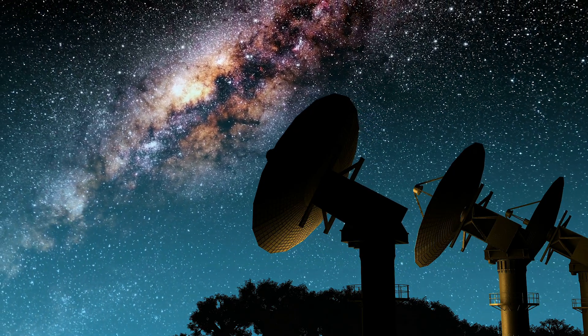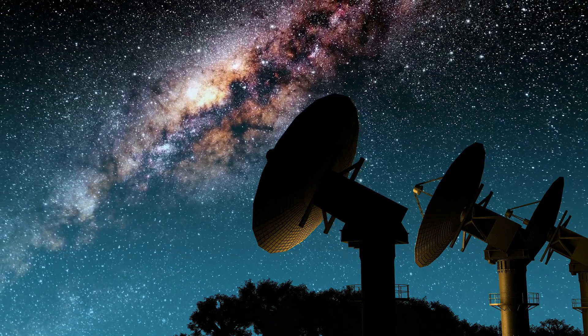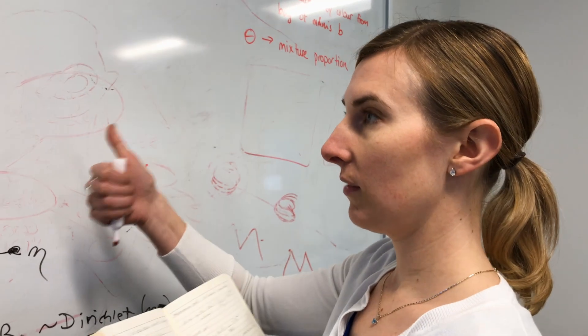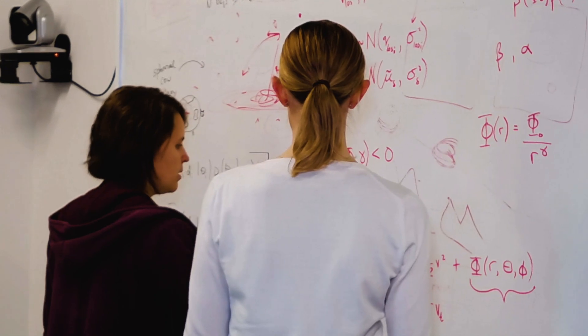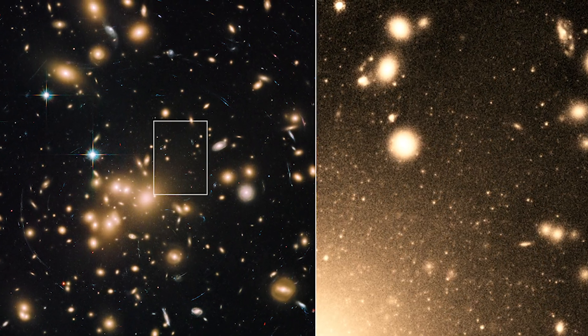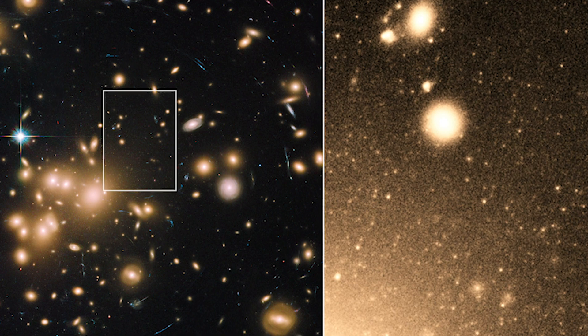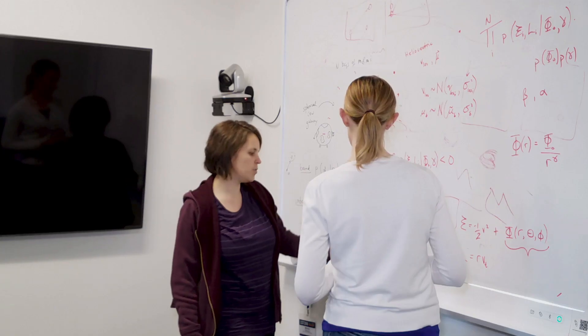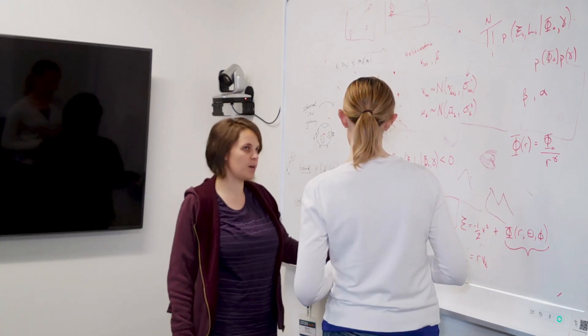But how do you measure something that you can't see? To do that, you need to use data that you can see. Around the Milky Way there are objects called globular clusters, which are very compact objects of tens to hundreds of thousands of stars. The Milky Way has about 150 globular clusters and they orbit the Milky Way — we can measure their distances from the center of the galaxy and how fast they're going.